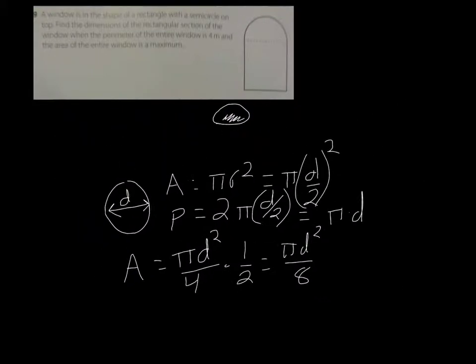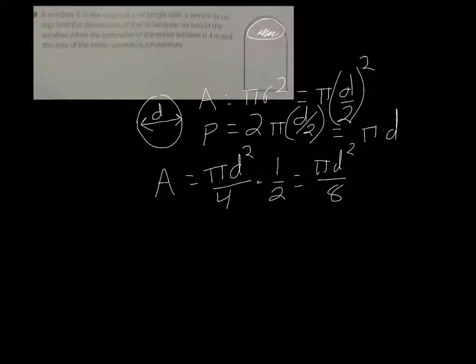And then also our perimeter will be equal to P = πd/2, because again that's just one half the circumference. So those are those two values.